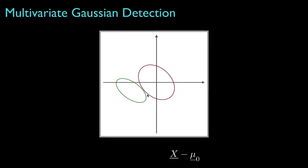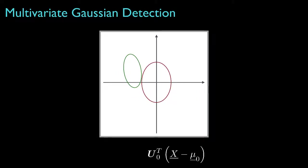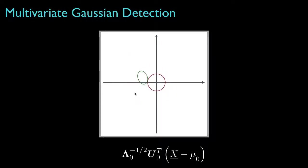If we subtract the mean for hypothesis 0, then we'll move both ellipses by the amount that moves the ellipse for hypothesis 0 to the origin. Then, if we rotate the density for hypothesis 0 so that it is uncorrelated, we'd get a corresponding rotation for the ellipse corresponding to the density for hypothesis 1, and the result would look something like this. Then, if we scale the data according to the eigenvalues for hypothesis 0, we'd see something like this.